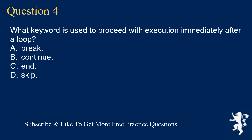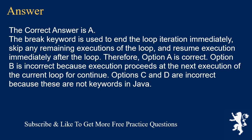Question 4. What keyword is used to proceed with execution immediately after a loop? A. Break. B. Continue. C. End. D. Skip. The correct answer is A. The break keyword is used to end the loop iteration immediately, skip any remaining executions of the loop, and resume execution immediately after the loop. Option B is incorrect because execution proceeds at the next iteration of the current loop for continue. Options C and D are incorrect because these are not keywords in Java.